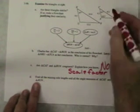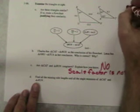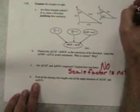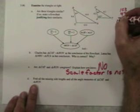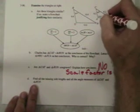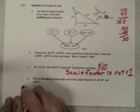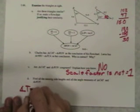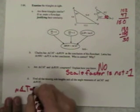Last one, find all the missing side lengths and all of the angle measures. Angle measure is going to be the easiest. We know that 103 and 47 are going to add up to 150. That means that the remaining angle has to be 30. So angle T equals the measure of angle T equals 30.